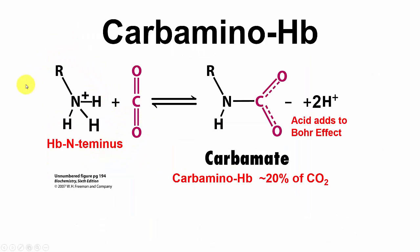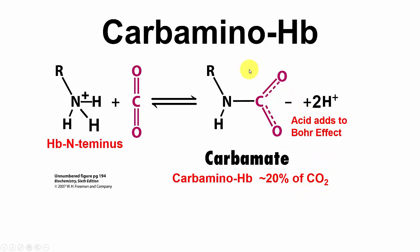Carbaminohemoglobin: here's the amino terminus of hemoglobin, where R is the rest of the hemoglobin molecule. Carbon dioxide reacts with that to form carbaminohemoglobin — here's the nitrogen and the carboxyl group associated with it, also called a carbamate. About 20% of the hemoglobin will be carrying CO2 as it goes back to the lungs.